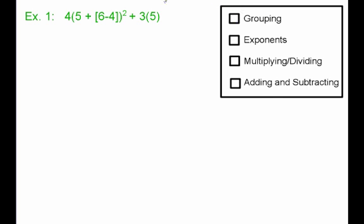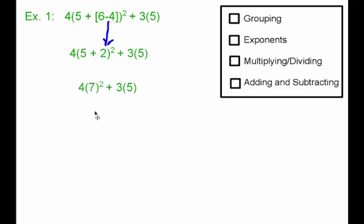Our first step is grouping symbols. I've got a set of parentheses right here, and inside the parentheses I have these brackets, and inside the brackets I have 6 minus 4. So that's the first thing I want to do — simplify 6 minus 4, which gives me 2. Now, am I done with grouping symbols? Nope. I've still got 5 plus 2 in here. So 5 plus 2 gives me 7. Now, do I have any more grouping symbols? I still have parentheses, but these parentheses really just mean multiplying, and there's nothing to do inside of them. So I am done with grouping symbols.